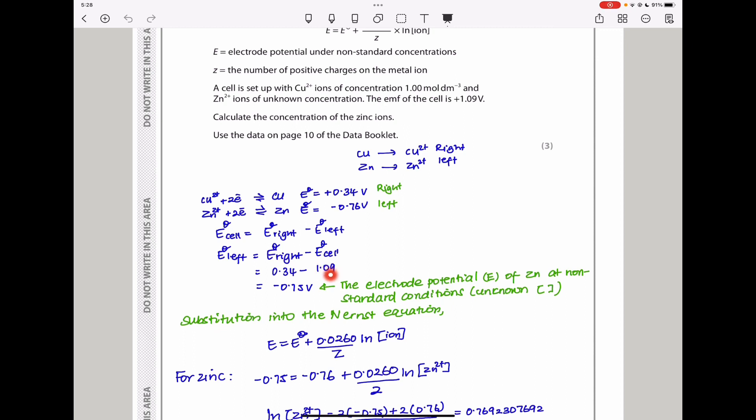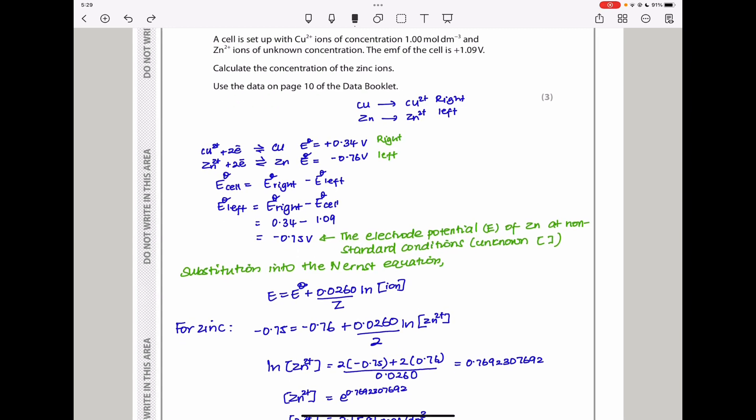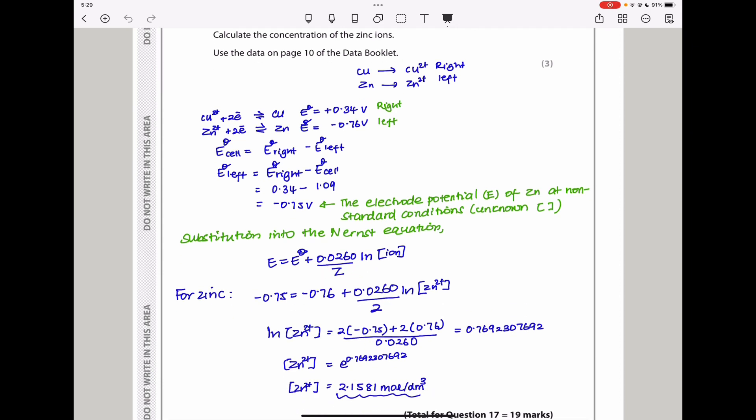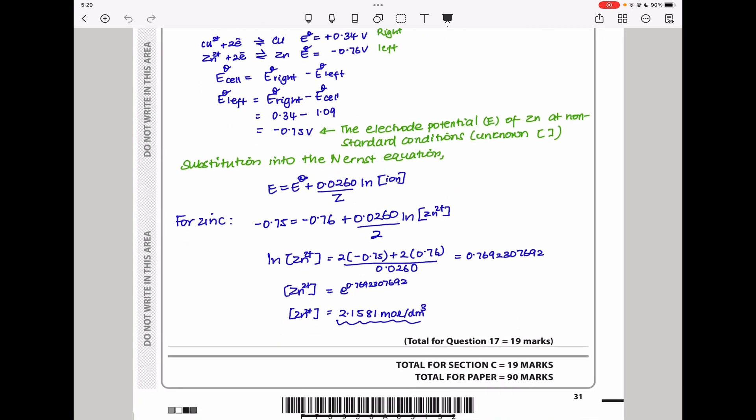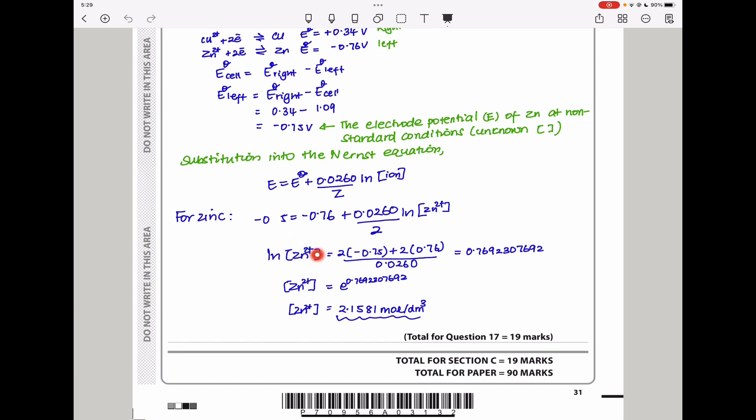From my equation, E equals E theta plus 0.0260 divided by Z times natural log of the concentration of the ion. This is the E theta from the data booklet. Z is the charge on the ion, zinc(II), so its charge is 2+. I made natural log the concentration of zinc(II) ions the subject and got 0.7692. Using your calculator, you can calculate the concentration, which is 2.1581 mol per dm³.